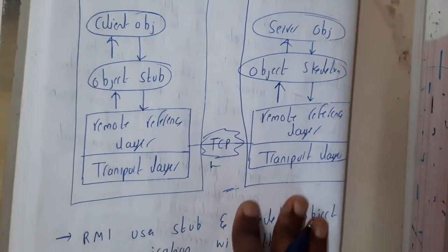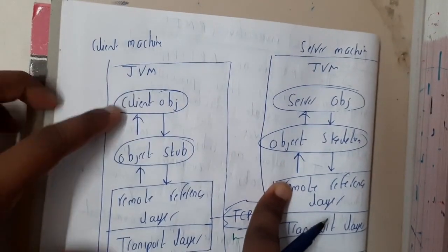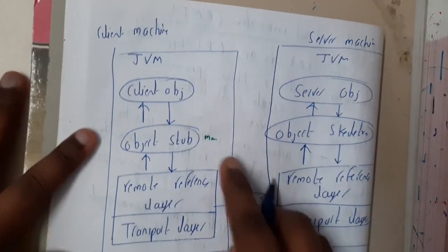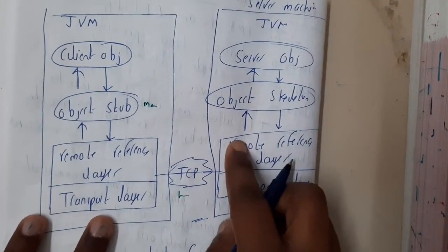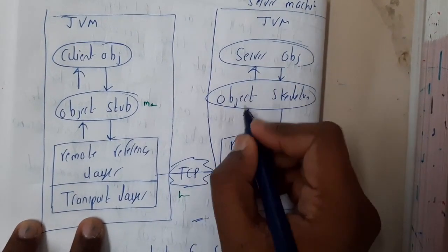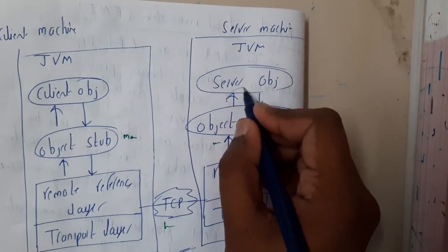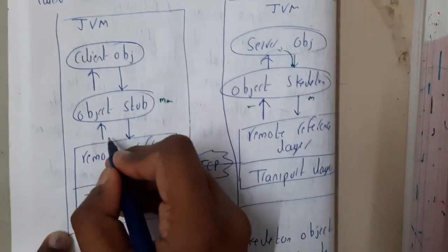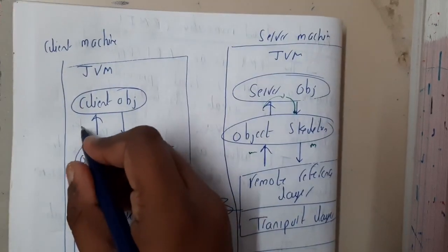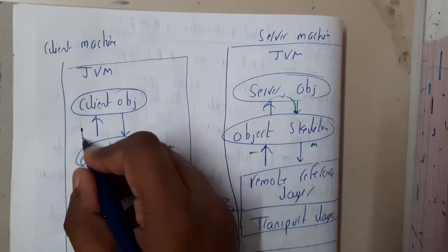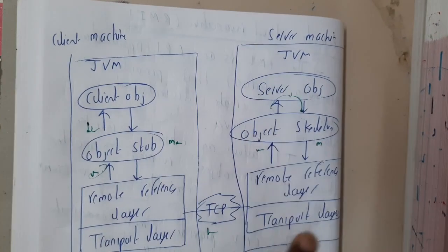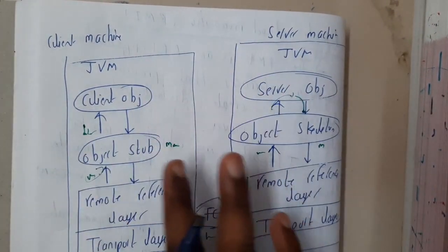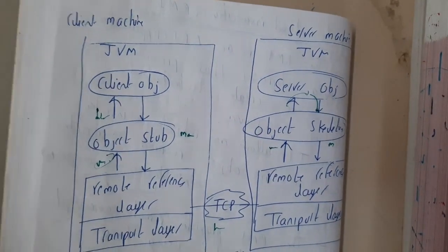Here is the whole flow: the client requests something, the stub receives it and marshals the data — that is, encrypts it — and passes it through the network. On the server side, it is received, unmarshaled, the particular process is performed, and the result is marshaled again and passed back through the network. On the client side, the data is unmarshaled again and the final result is returned. The flow is the same as RPC, but instead of packing/unpacking into messages, we use the term marshaling and unmarshaling here.